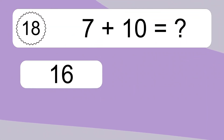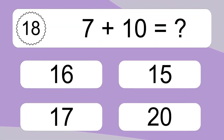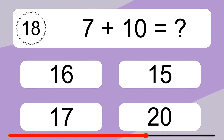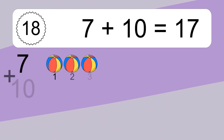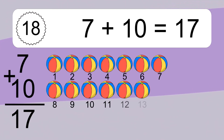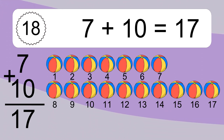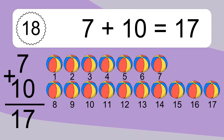7 plus 10 equals what? Let's count it. 1, 2, 3, 4, 5, 6, 7, 8, 9, 10, 11, 12, 13, 14, 15, 16, 17.